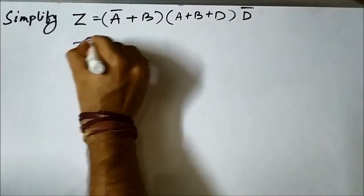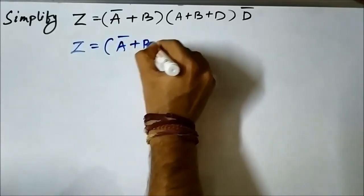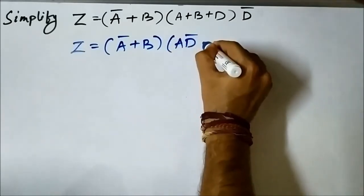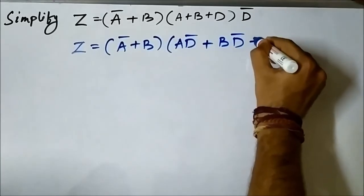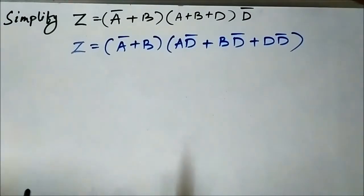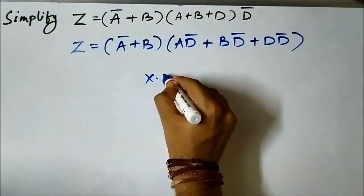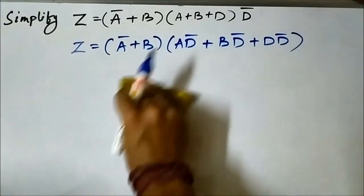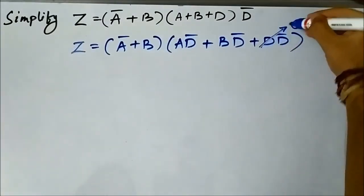Expanding, z = (ā + b)·(a·d̄ + b·d̄ + d·d̄). We know that any Boolean variable ANDed with its complement gives zero, so d·d̄ = 0. That term drops out.